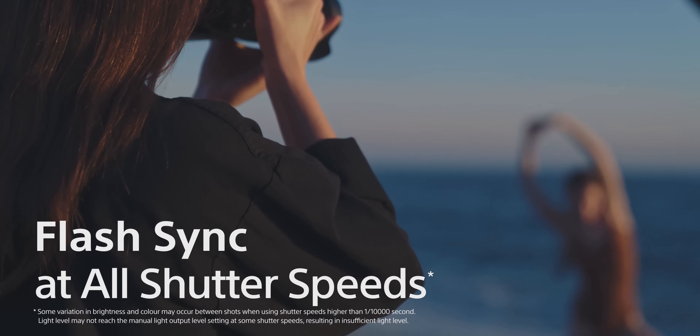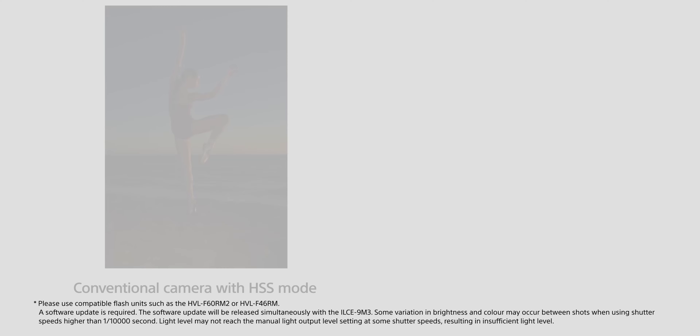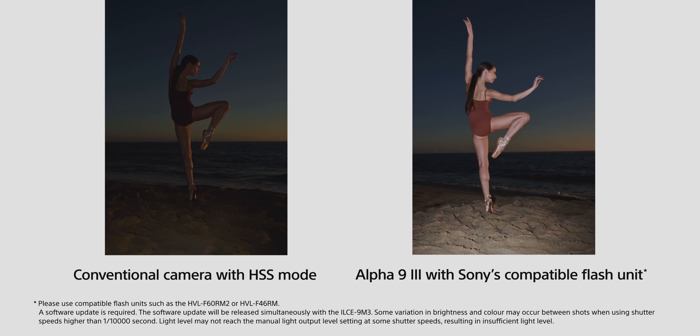Another key feature of the global shutter is flash sync at all shutter speeds. Because there is no rolling shutter, all pixels are simultaneously read and exposed at once, so you can use a high-speed flash at any shutter speed. You can fire a flash with a duration as short as 1 millisecond. This feature is already available on high-end flash units in the market, and they can easily sync with this camera.